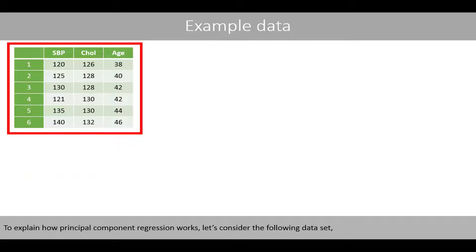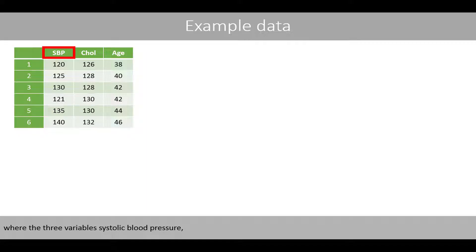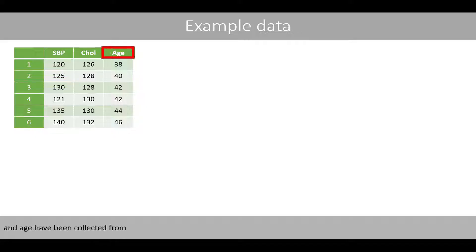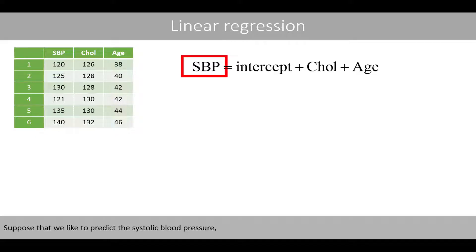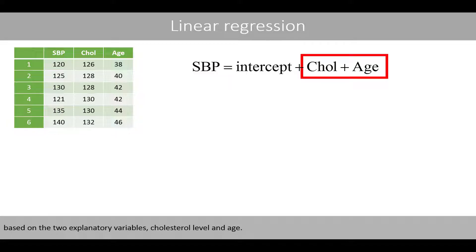To explain how principal component regression works, let's consider the following dataset. Three variables — systolic blood pressure, cholesterol level, and age — have been collected from six individuals. Suppose that we'd like to predict systolic blood pressure based on the two explanatory variables: cholesterol level and age.